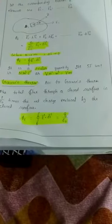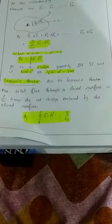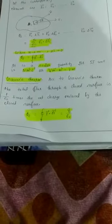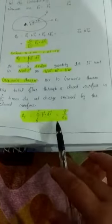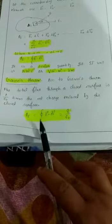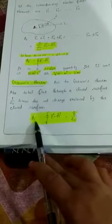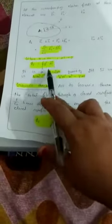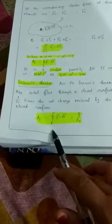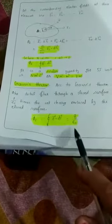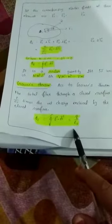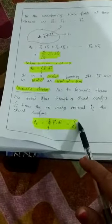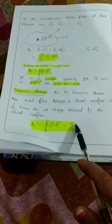The total electric flux through a closed surface is 1 by epsilon naught times the charge enclosed by that closed surface. The area is S and the total flux is given by E.DS integration over the closed surface. It will be Q by epsilon naught. Epsilon naught means permittivity of free space or vacuum. Q means the charge enclosed by that closed surface.